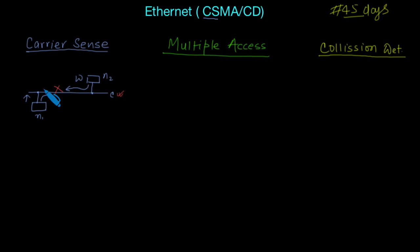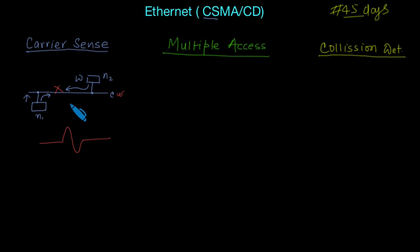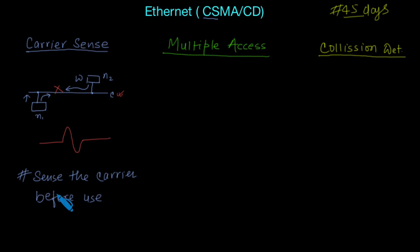In Carrier Sense, whenever a node tries to use the carrier, it first senses the carrier to check whether it is being used by some other channel or not. To check this, the node senses whether there is a voltage level in the carrier. If there is a voltage level, it means the carrier is being used by some other node, because data is transferred at a low level in terms of voltage. This is called Carrier Sense — sense the carrier before you try to use it.